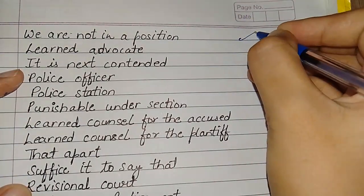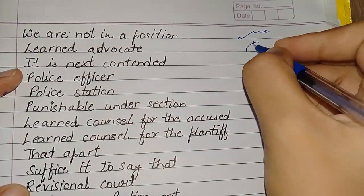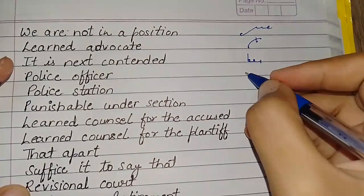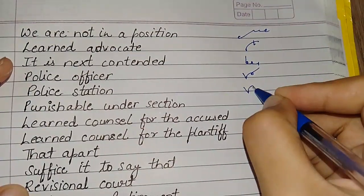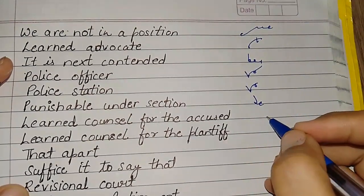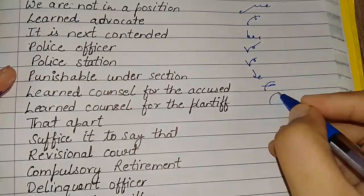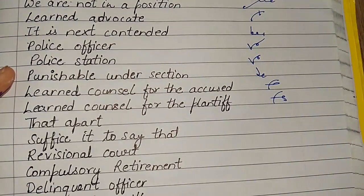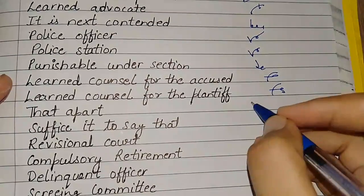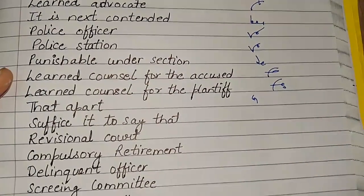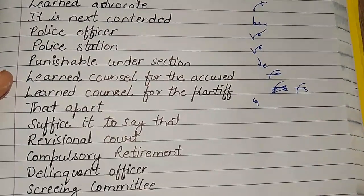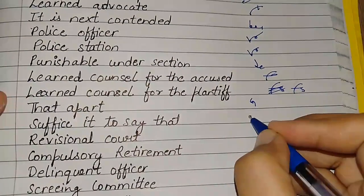Learned advocate, it is next contended. Police officer, police station, punishable under section. Learned counsel for the accused, learned counsel for the plaintiff. Here I mistakenly circled S. That apart, suffice it to say that.